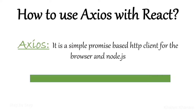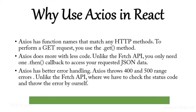Hello guys, this is my 53rd video in the React series. In our previous video we have seen what is axios, why we have to use axios with React, and what is GET request. It is a simple promise-based HTTP client for the browser and Node.js. We also saw how to install and import this package, and using one example we covered GET request and why we use axios in React.